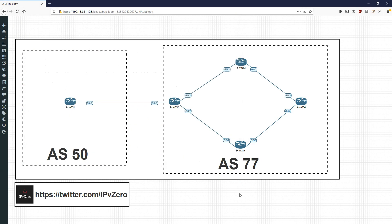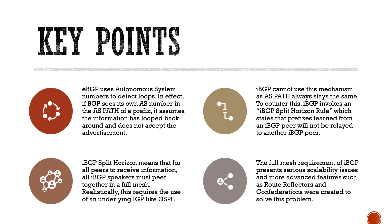To recap: eBGP uses the AS path to detect loops — if a router sees its own AS number in the AS path, it assumes a loop and rejects the advertisement. iBGP can't use that mechanism because the AS number never changes within an AS, so it invokes the iBGP split horizon rule: routes learned via iBGP are not passed on to another iBGP speaker. This requires a full mesh, which presents scalability issues that can be remedied by route reflectors and confederations. That's the end of the BGP loop prevention video — thanks and see you soon.